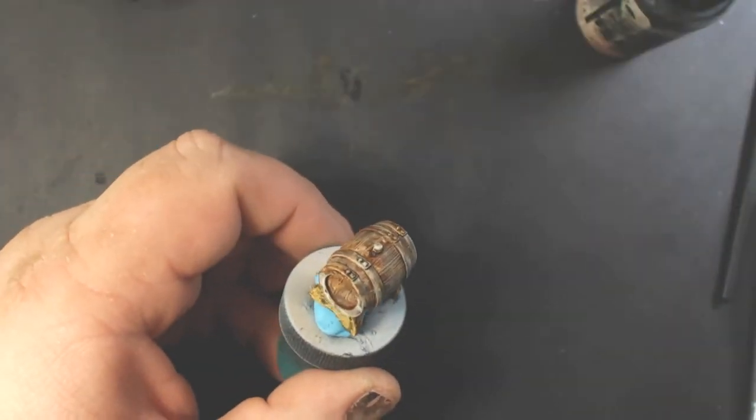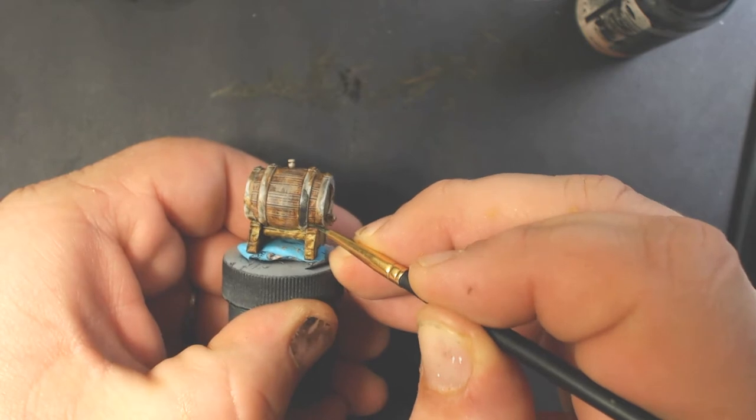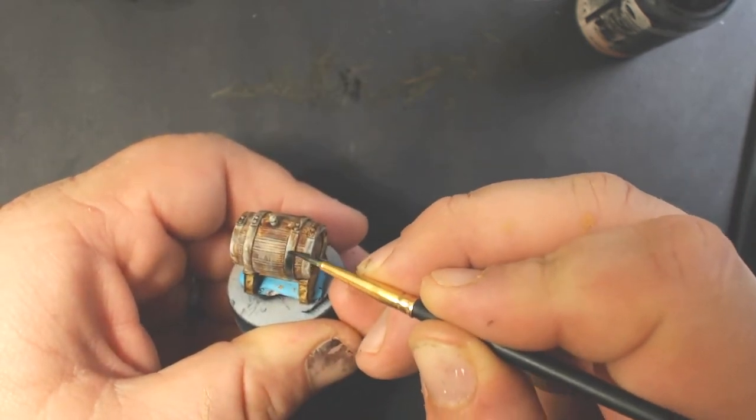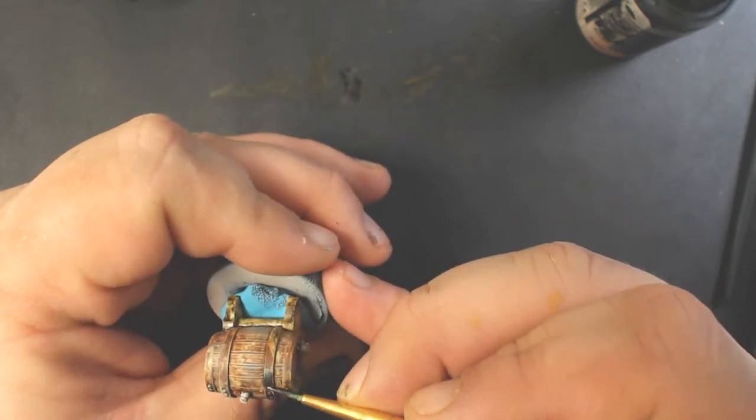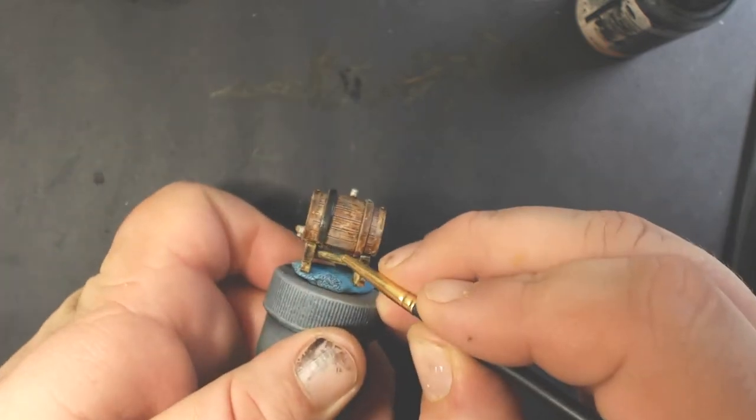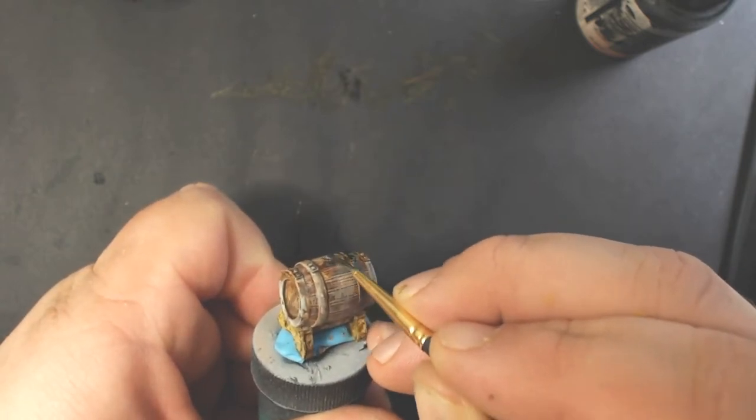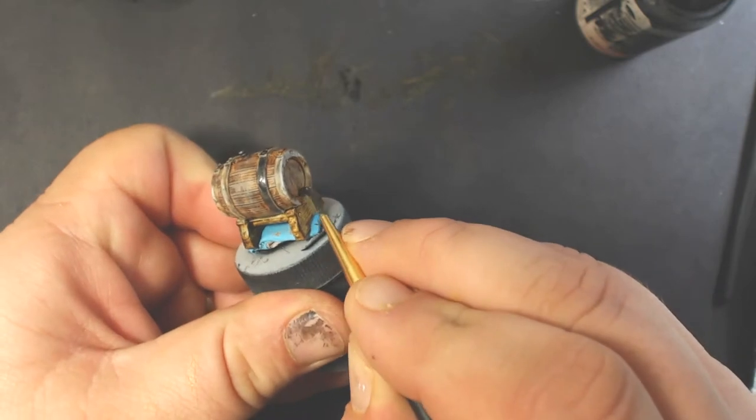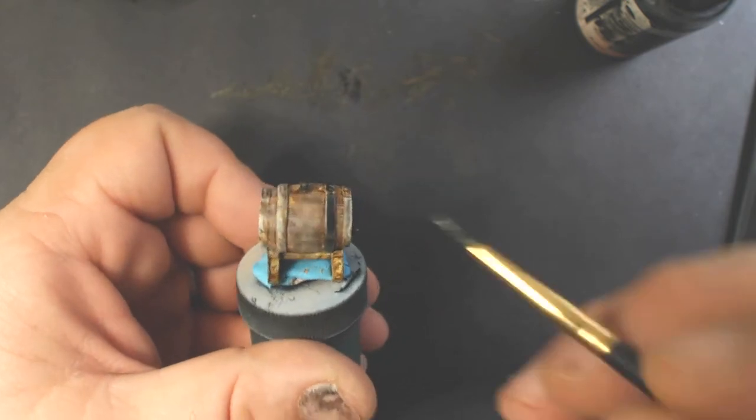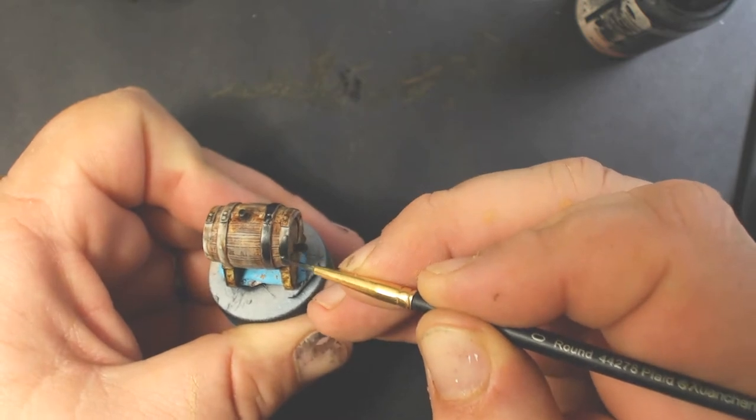Now we've got some Vallejo Metal Color Magnesium and paint all of the metal banding and the taps. Works best if you just try to use the side of your brush and just go along. I'm painting the taps here. I think on these smaller barrels I ended up painting the taps gold.